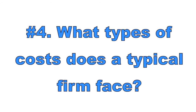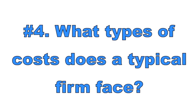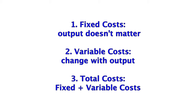Number four: what types of costs does a typical firm face? There are three types of costs. One: fixed costs must be paid to resource suppliers regardless of output — an example is rent paid for factory space; when a firm produces zero units, it still pays its fixed cost. Two: variable costs change with output — an example is an hourly employee. Three: total costs equal fixed costs plus variable costs.